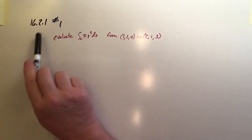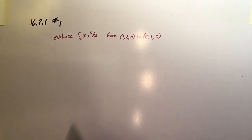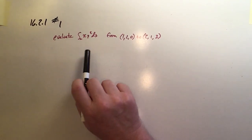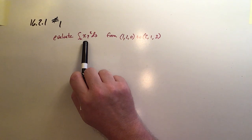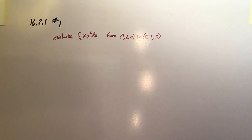This is section 16.2.1 number one. It's the first example that we're doing on line integration and this one's kind of a classic. We've got a function DS. We're not evaluating a dot product, it's just the function itself.